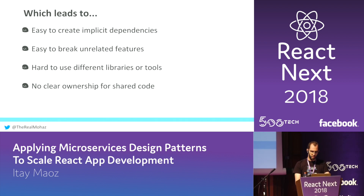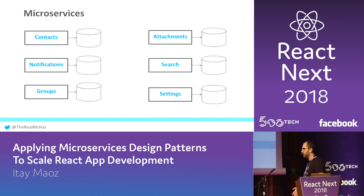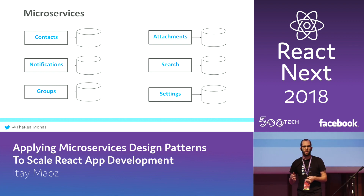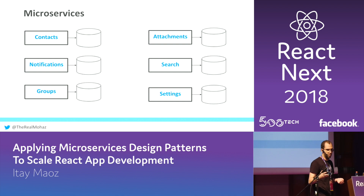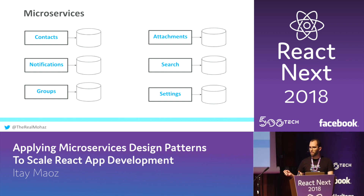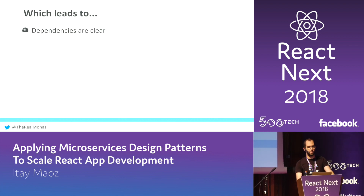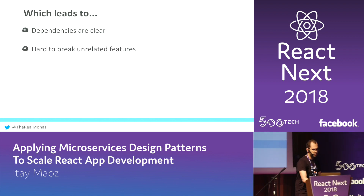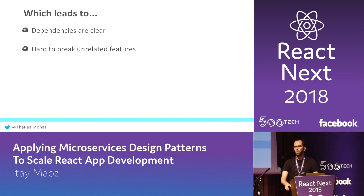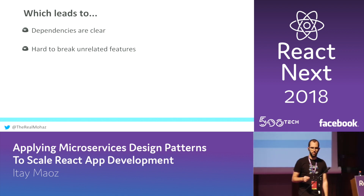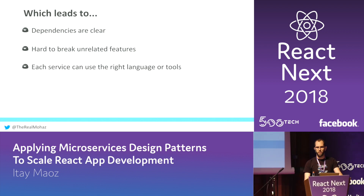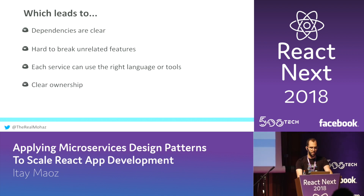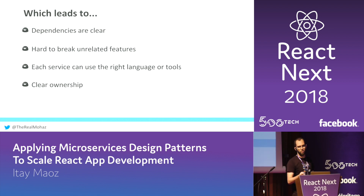So all these problems were solved in back-end development by microservices. We basically took modules and logic outside of our big monolith and split them out to their own service, deployed independently with its own data store. That gave us a lot of advantages: dependencies are now clear — if you want to use functionality from a different service, you have to make an explicit API call. It became harder to break unrelated features because when you change code inside your service, you know it only affects your service. Each service can be written in any language and use any data store, and ownership became clear because each service was maintained by a single team.